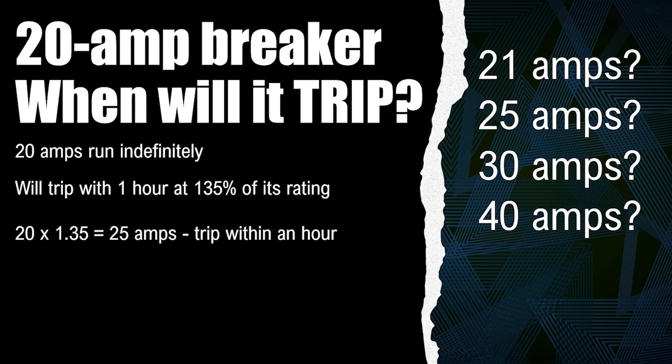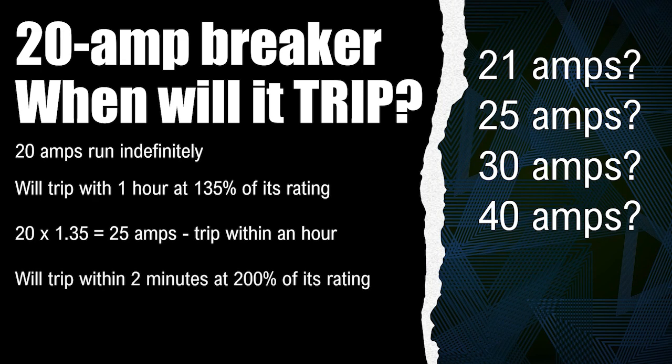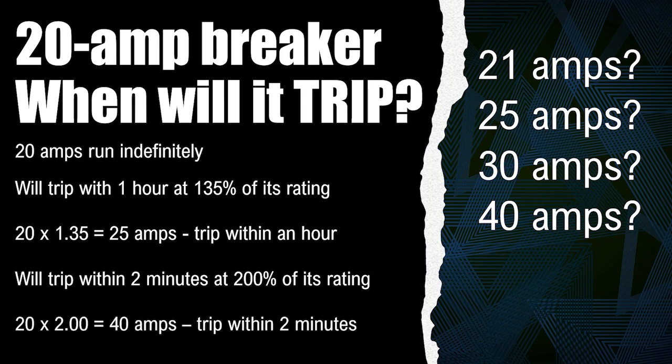The buses — all these rules are supposed to work in perfect unison in a perfect world to protect all of that. So the next standard is that it must trip within two minutes at 200% of its rating. If it's tripping within two minutes, it's doing its job. Somebody like ETL is going to put their sticker on it saying it's performing the way it's supposed to. So if we take that 20 amps and multiply it by 2.0, we end up with 40 amps, and it's required to trip within two minutes.